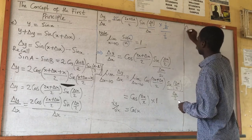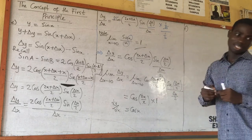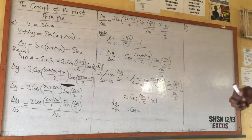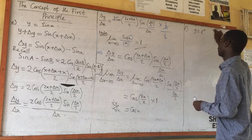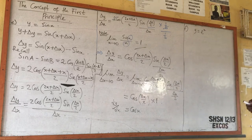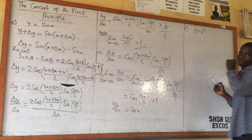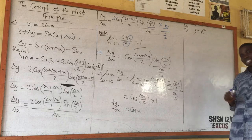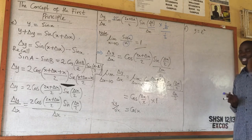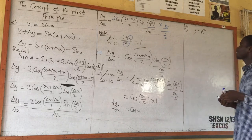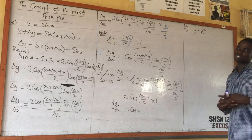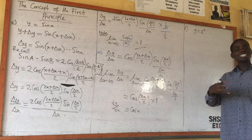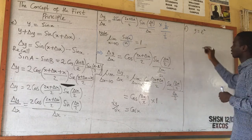So the next example, Example 6. Example 6 is y equal to exponential s. So we want to differentiate this from first principles. Y is equal to exponential s. Looking at this, it might look very difficult. But I tell myself I will do my best. So let's start.